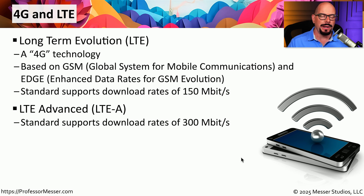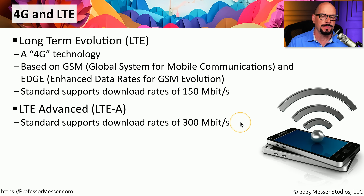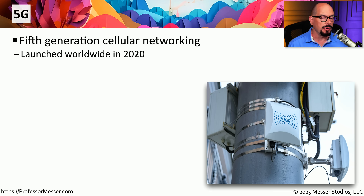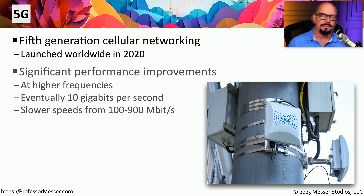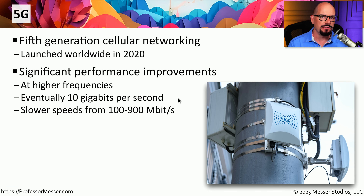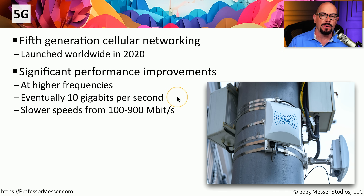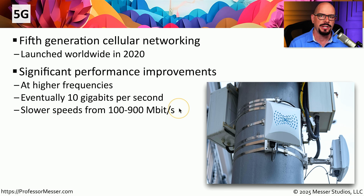We were then able to upgrade LTE to LTE Advanced, or LTEA. That standard allowed throughputs of up to 300 megabits per second, greatly increasing the amount of data we could send over these networks. Our modern mobile networks use our fifth generation of networking, or 5G. 5G was introduced in 2020 and greatly improved bandwidth. Over higher frequencies, 5G is designed to support up to 10 gigabits per second, while other frequencies offer 100 to 900 megabits per second of throughput.